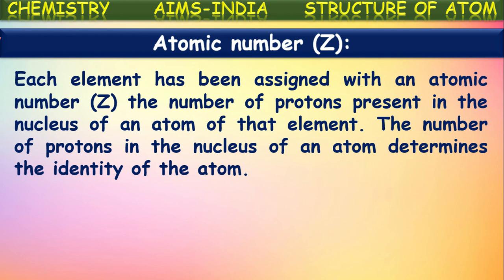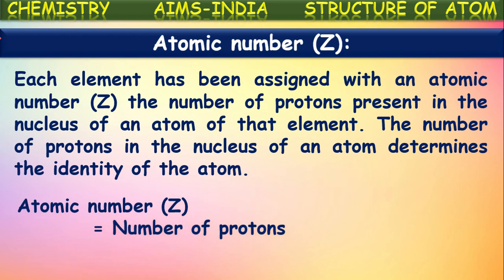How many number of protons are there — the same number is given as its atomic number, because for each and every element the number of protons in the nucleus of its atoms determines its properties like identity of that atom. It is denoted with the symbol capital Z. So atomic number Z is equal to number of protons.